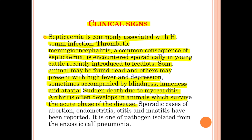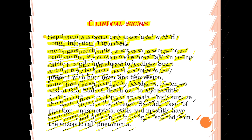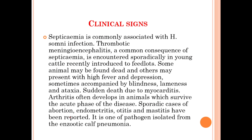Arthritis often develops in animals which survive the acute phase of the disease. Sporadic cases of abortion, endometritis, otitis, and mastitis have been reported. Haemophilus somni is also one of the pathogens isolated from enzootic calf pneumonia.